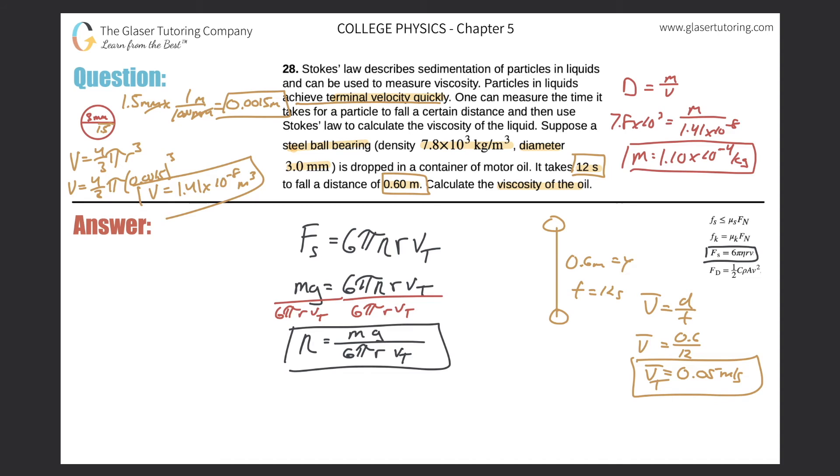I got all the pieces I need. Let's just plug it all in. The viscosity will be equal to the mass, 1.10 × 10⁻⁴, times gravity, 9.80, divided by 6π, times the radius 0.0015, times the terminal velocity 0.05. So plug it in: 1.1 × 10⁻⁴ × 9.8, divided by 6 × π × 0.0015 × 0.05, and we get a value of 0.763 kg/(m·s). Alright guys, thank you so much for tuning in. I hope this helped. Please remember to subscribe, and I look forward to helping you out with your next question. Until then.